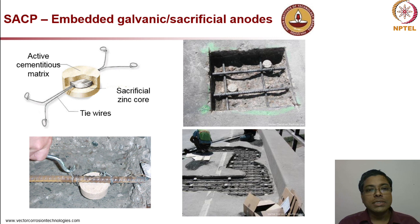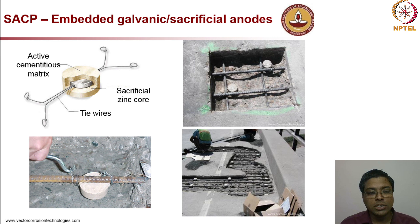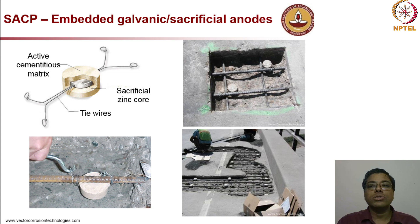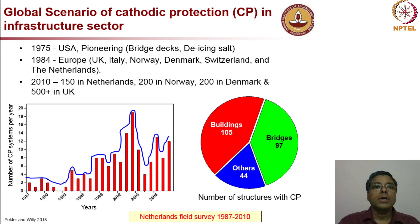In the SACP system — that is, the sacrificial anode cathodic protection system — you have a sacrificial anode core metal like a disc, which you can see in the top left image, covered by an active cementitious matrix, also called encapsulating mortar. These are connected via a tie wire to the rebar. Some pictures on screen indicate how it is practiced at site.